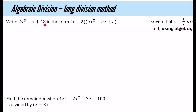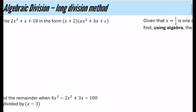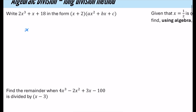We're going to try and write this expression in this particular form, which means dividing it by (x+2). When we do the division by (x+2), we start with x+2 outside the front. There's no x² term in the original, so I'll write it in as 0x². Then I've got my plus x plus 18, just to keep everything in the correct places.